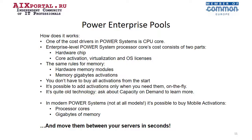How does it work? One of the cost drivers in Power Systems is the CPU core. Enterprise-level Power Systems processor core cost consists of two parts: first, the hardware chip itself, and second, cores activation, virtualization, and operating system — like AIX or IBM i licenses. Similar rules apply for memory. We pay for memory modules — DIMMs — and activations of gigabytes. We don't have to buy all activations from the start; we may add them on the fly, on demand, without stopping our environment. It's a quite well-known technology called Capacity on Demand.